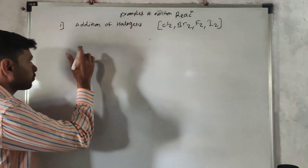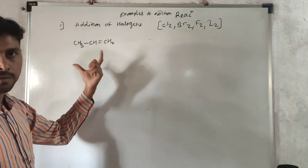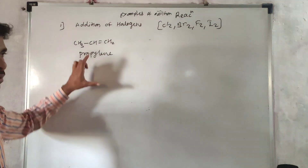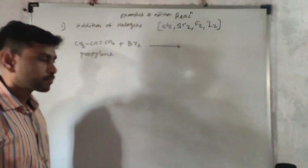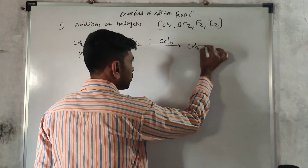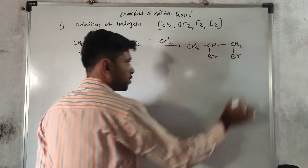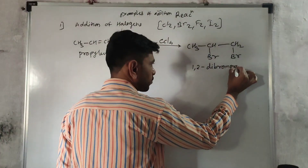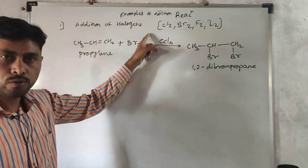We add Br2 in the presence of CCl4 to propylene. The unsaturated double bond is removed by adding the reagent. We get 1,2-dibromopropane. So in this first example of addition of halogens, the double bond in propylene reacts with Br2 in presence of CCl4 to give 1,2-dibromopropane.